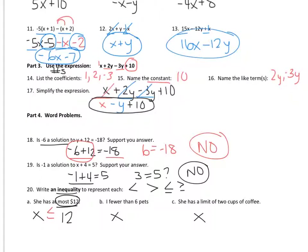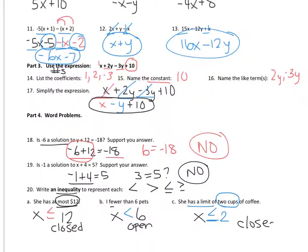I have fewer than 6 pets — I'm going to put 6. Fewer: can you have 6? No. Can you have 5? Yes. So it's less than 6. She has a limit of 2 cups, so 2 is my number. A limit means you can have it, so I put the equal sign, and a limit means you can't go over it, so it's less than or equal to. If you had to graph it, this would be a closed dot, that one an open dot, and this one a closed dot — but we'll go over that on the next page.